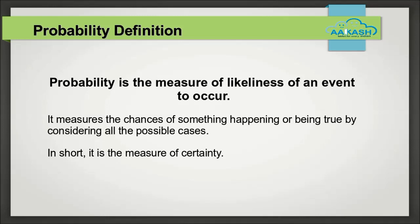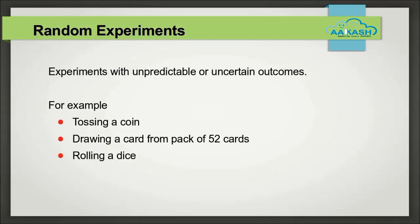Now, how do we consider all possibilities and measure their certainties? Let's find out with some examples. For understanding probability, we need to understand where exactly the concept of probability comes into picture. Probability exists where there is uncertainty or unpredictability. Random experiments are the experiments which have unpredictable or uncertain outcomes. However, if we know the possible outcomes and all of them are equally likely, it is easier to find the probability of such outcomes.